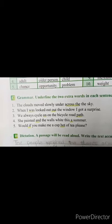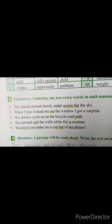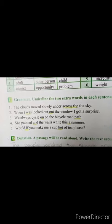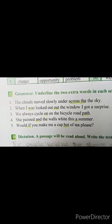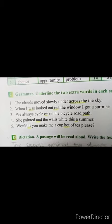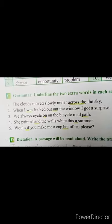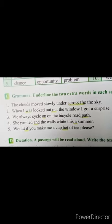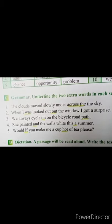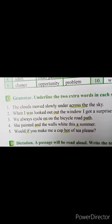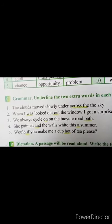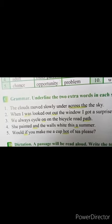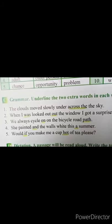Students, come towards exercise C of page 18. This is the grammar portion — underline the two extra words in each sentence. آپ کو ہر sentence میں two extra words given ہیں جو grammatically wrong ہے، تو آپ نے ان کو underline کرنا ہے. First one: 'The clouds moved slowly under across the sky.' Under means نیچے، across means آمنے سامنے — so 'across the' کو ہم underline کریں گے.